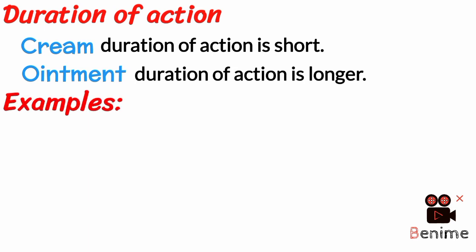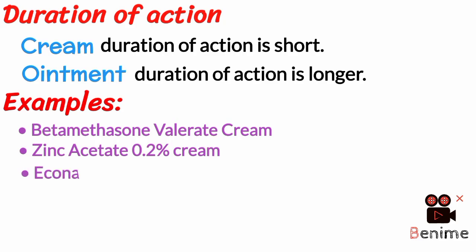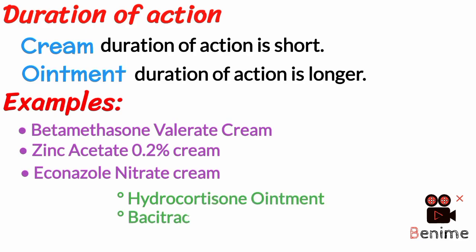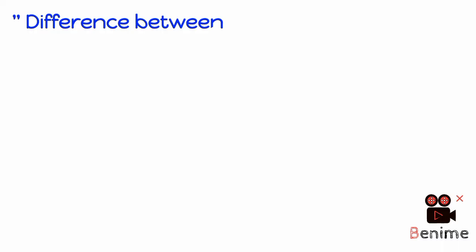Examples of cream and ointment — Creams: Betamethasone valerate cream, zinc acetate 0.2% cream, itraconazole nitrate cream, etc. Ointments: Hydrocortisone ointment, bacitracin ointment, and lidocaine ointment, etc. That's all about the difference between creams and ointment.